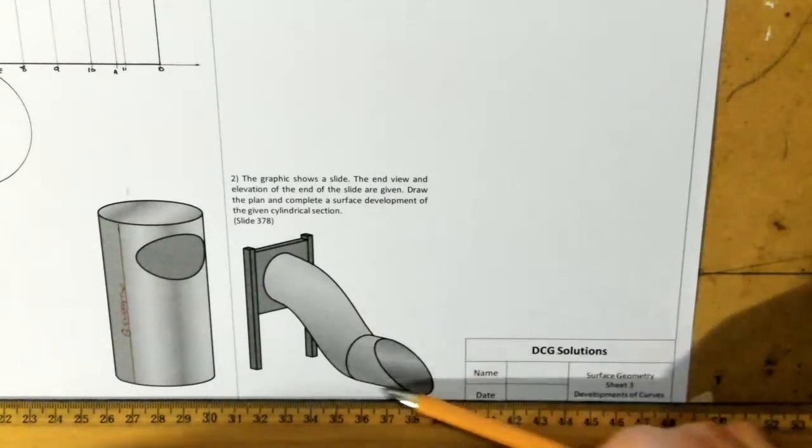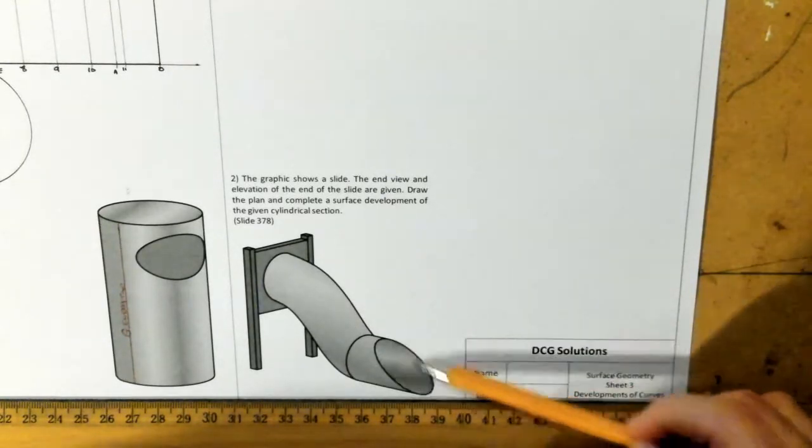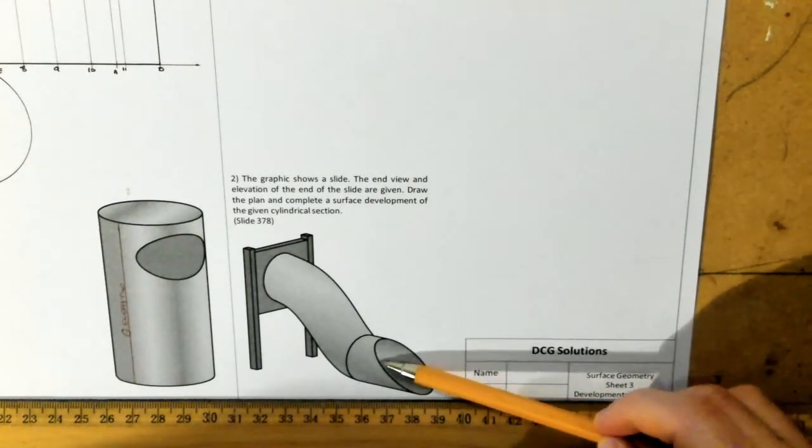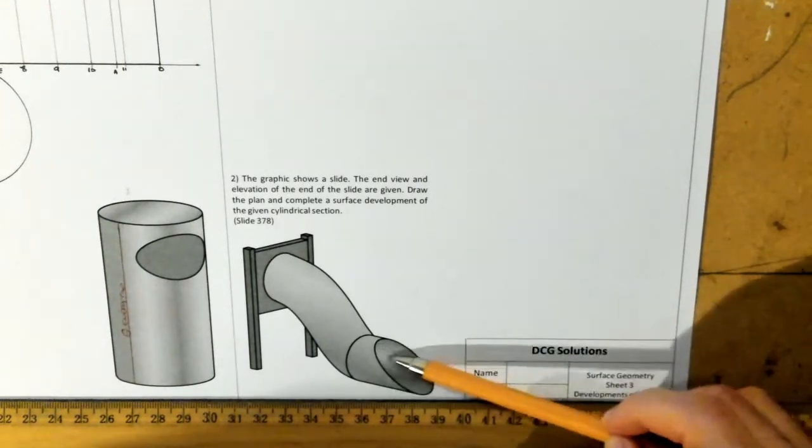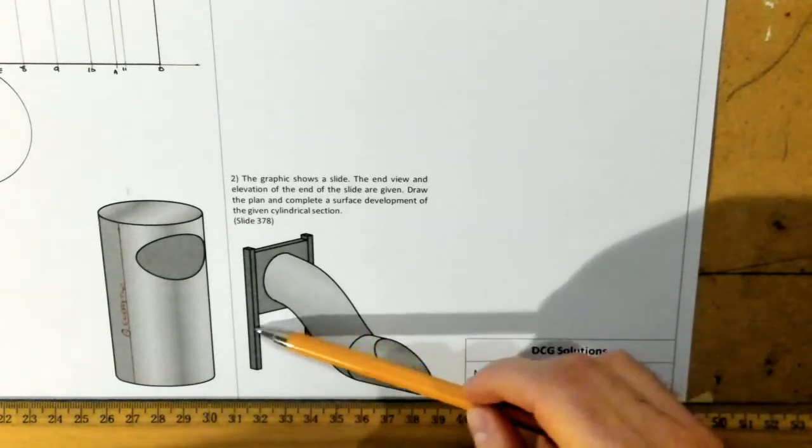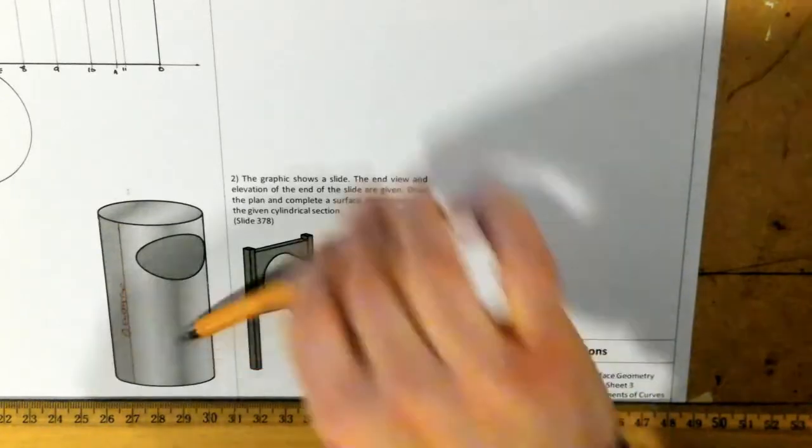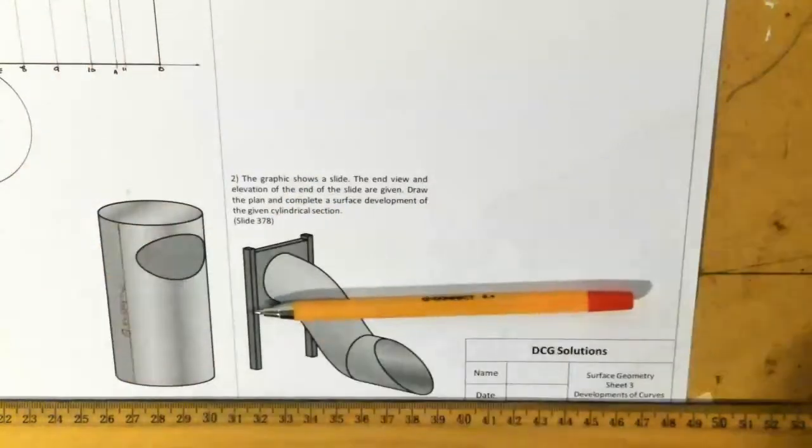Draw the plan and complete the surface development of the cylindrical section. This portion of the slide is the bit we're focusing on. It's essentially a cylinder that has been cut at an angle or truncated, and the cylinder isn't sitting on the ground, it is lying flat on the ground on its side.